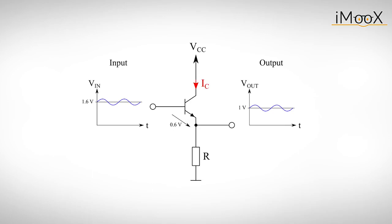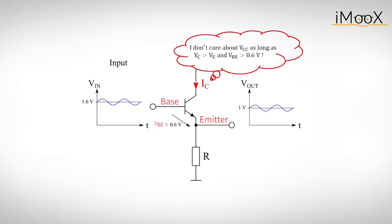At first glance, that doesn't seem like an impressive circuit, until you realize two things. One, the output current IC is basically independent of our supply voltage, as long as we remember to obey our two rules.